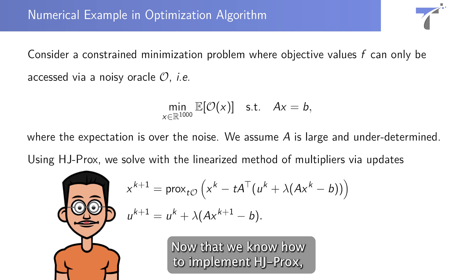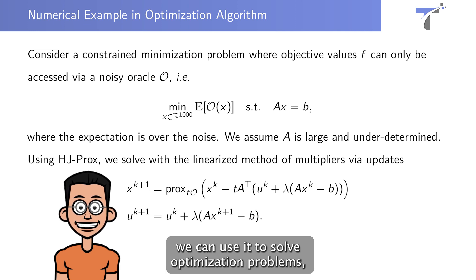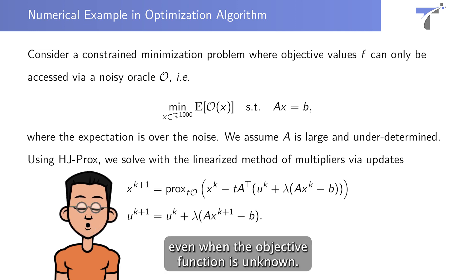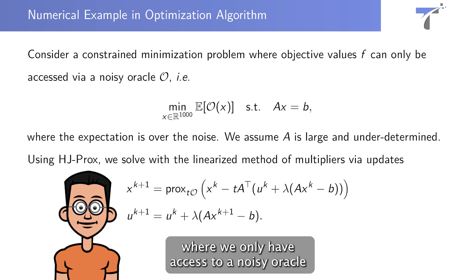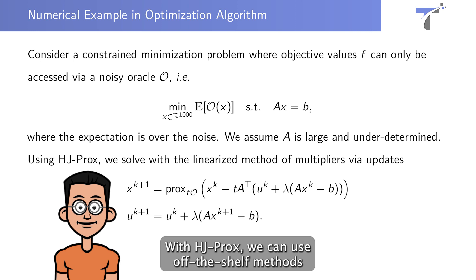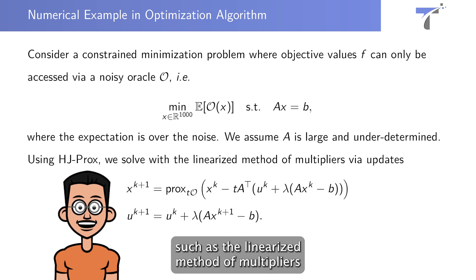Now that we know how to implement HJ-Prox, we can use it to solve optimization problems, even when the objective function is unknown. In this example, we consider a problem where we only have access to a noisy oracle, subject to linear constraints. With HJ-Prox, we can use off-the-shelf methods such as the linearized method of multipliers to solve this problem.